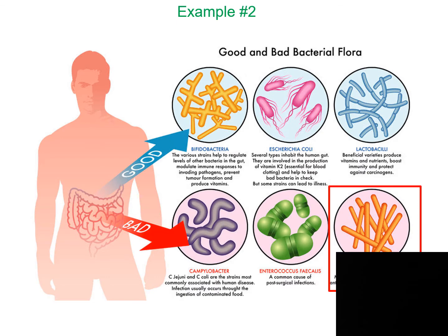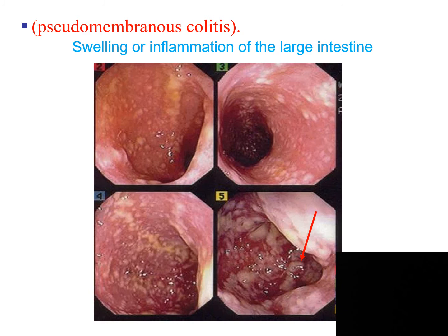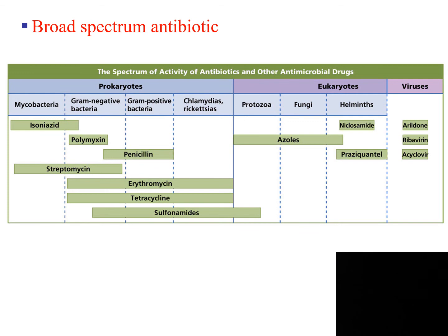Here's the second example, which takes place in the large intestines. Antibiotic-associated colitis is a disease or infection that causes pseudomembranous colitis. The antagonist to Clostridium difficile is destroyed when you take a broad-spectrum antibiotic. Now that you've killed the antagonist, Clostridium difficile will flourish. As this bacteria flourishes, it causes pseudomembranous colitis — swelling or inflammation of the large intestines — which is caused by a broad-spectrum antibiotic.